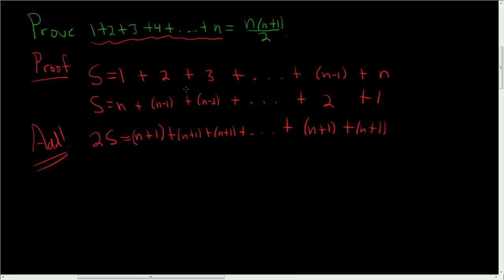If you think about it, we have n numbers, so there are n n plus 1s. So 2S is n times n plus 1, therefore S is n times n plus 1 divided by 2.